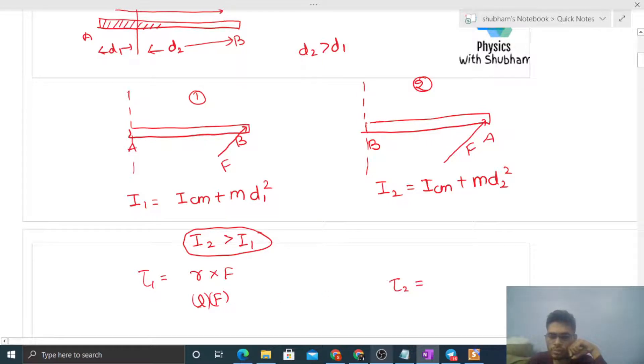Torque 2 also has magnitude L times F. Check the direction: r cross F is upward in both cases. Direction is same and magnitude is also same, so torque is the same in both cases.